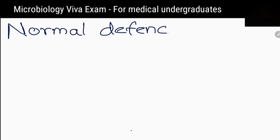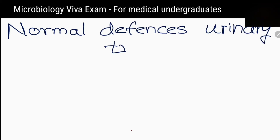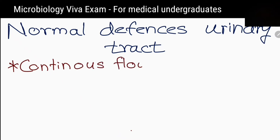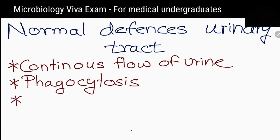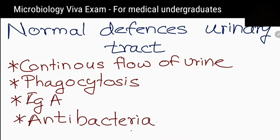What are the normal defenses that inhibit multiplication of bacteria in the urinary tract? Continuous flow of urine, phagocytosis, immunoglobulin A, and antibacterial substances.